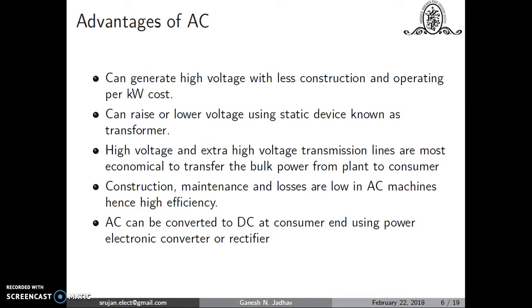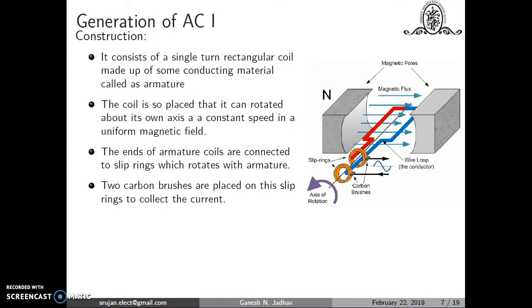AC can be converted into DC at the user end using a rectifier or electronic converter. Examples of DC use include traction locomotives and LED bulbs, where DC supply is obtained via a rectifier. Now, the generation of AC: it consists of a single turn of rectangular coil of conducting material called the armature. This coil rotates about an axis, with each end connected to a slip ring, and carbon brushes collect the AC voltage.